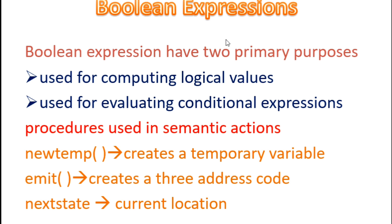For logical values, we have AND, OR, and NOT values. In the other case, we try to find whether the corresponding expression is true or not — that is called a conditional expression. The procedures used for semantic actions connected to Boolean expressions are: newtemp, which creates a temporary variable, and emit, which creates a three-address code to the output.